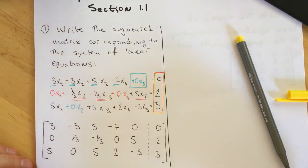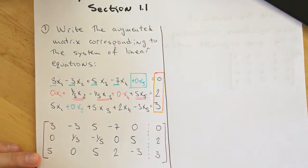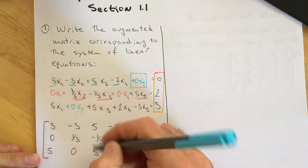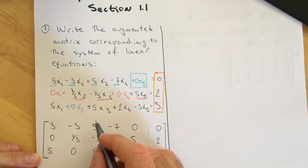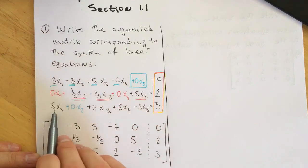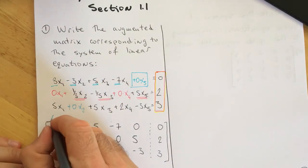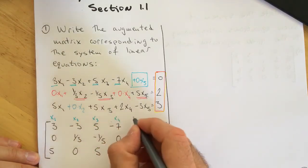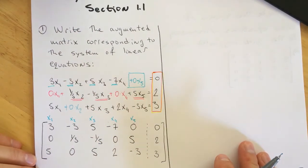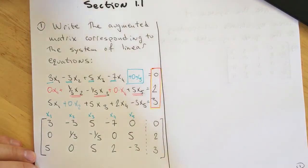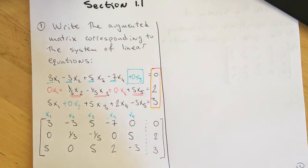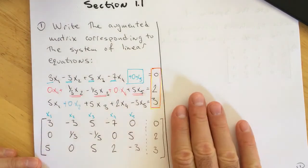The matrix consists of rows and columns. How many columns do we have? The number of columns depends on the number of variables. I have x1, x2, x3, x4, and x5, which means the coefficient matrix will have 5 columns, each column corresponding to a variable. Every augmented matrix has n plus 1 columns, n being the number of variables. Here we have 5 variables, so the augmented matrix has 6 columns.